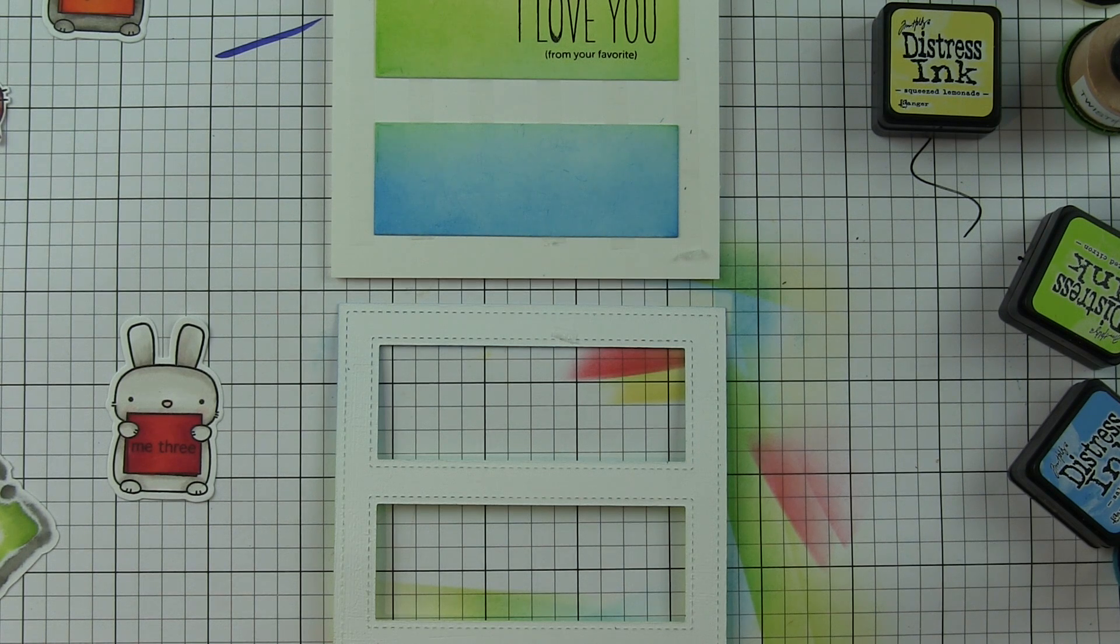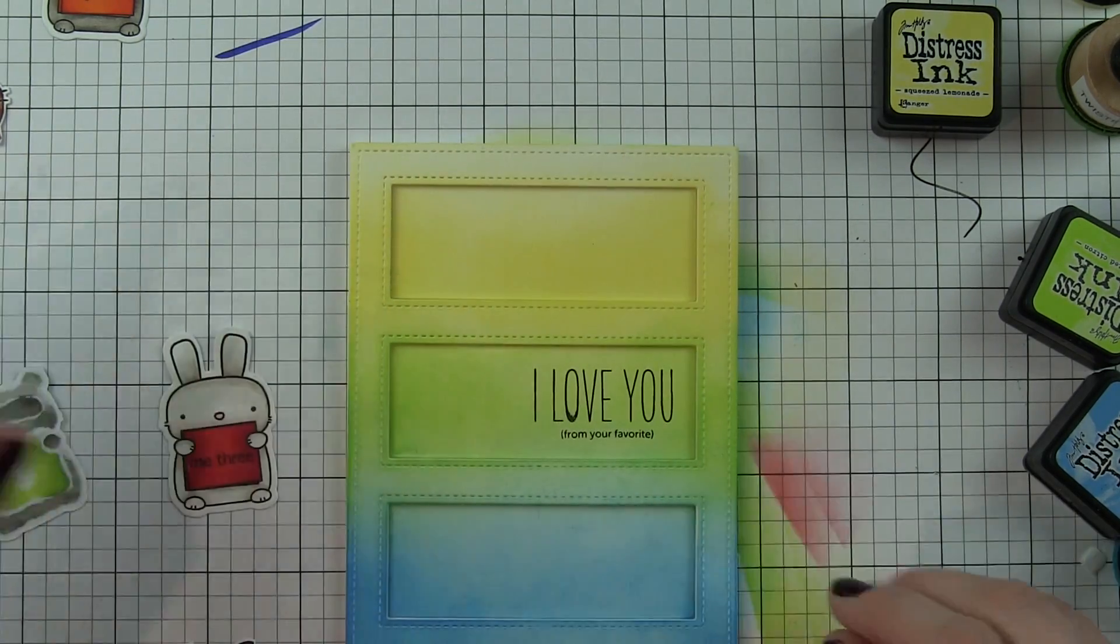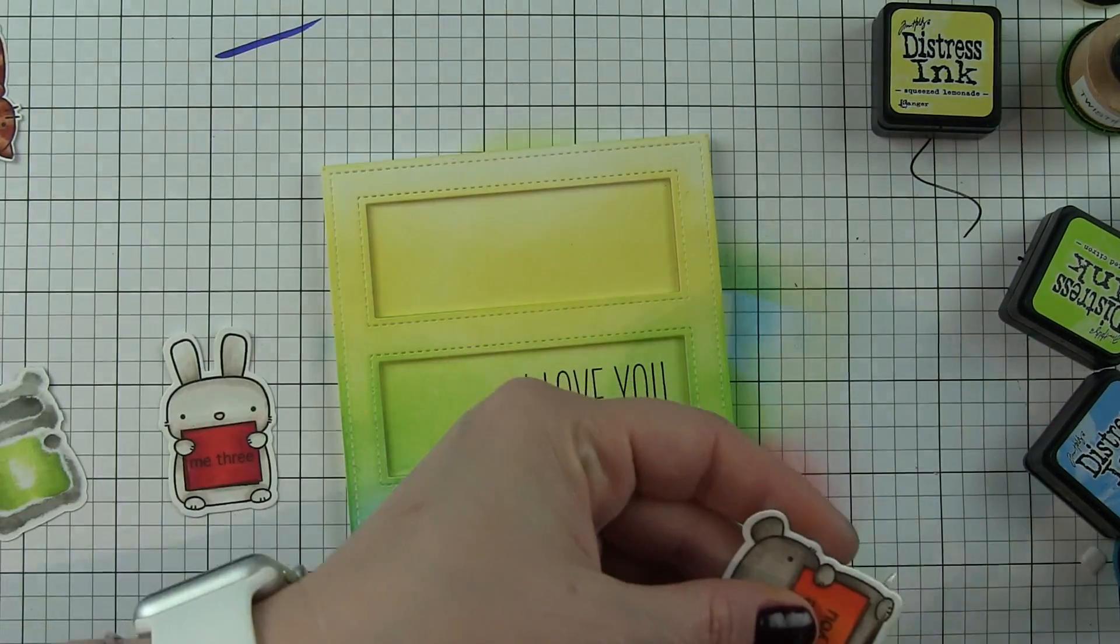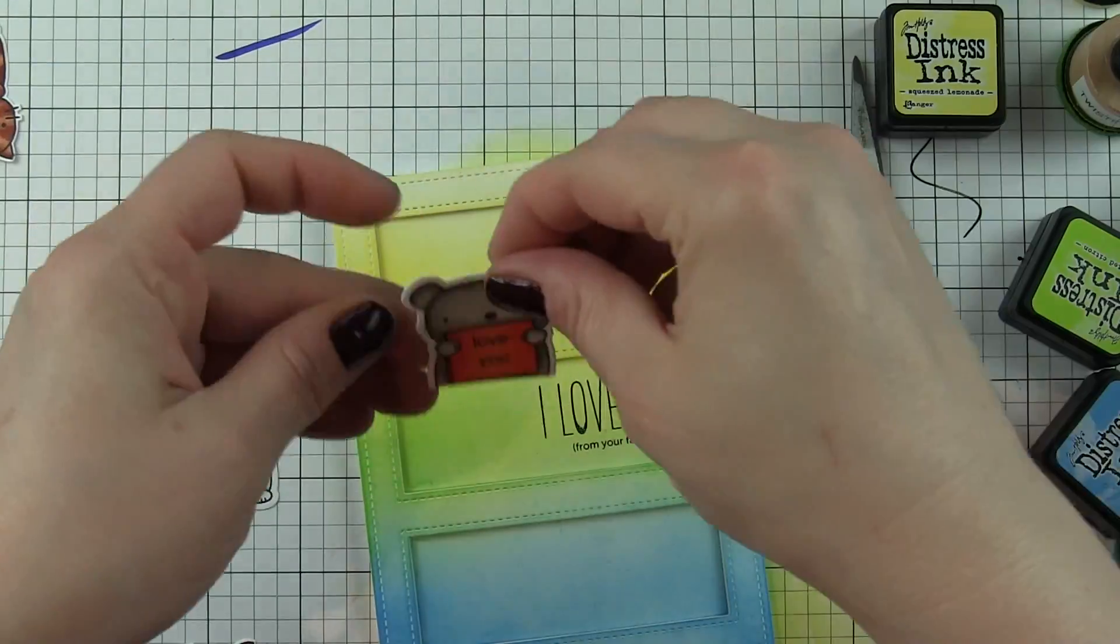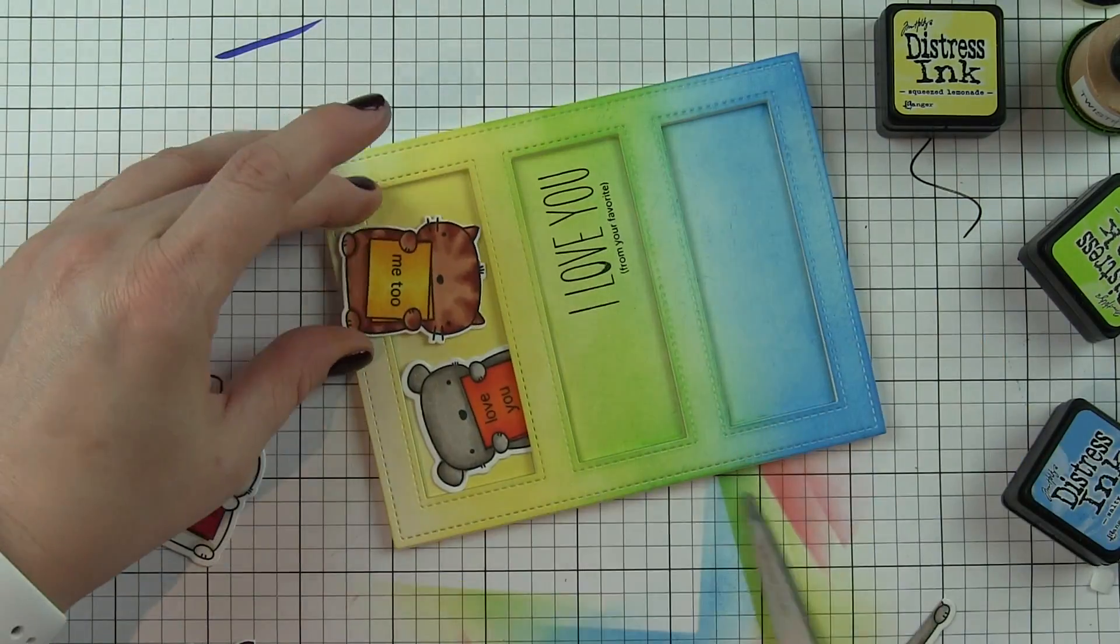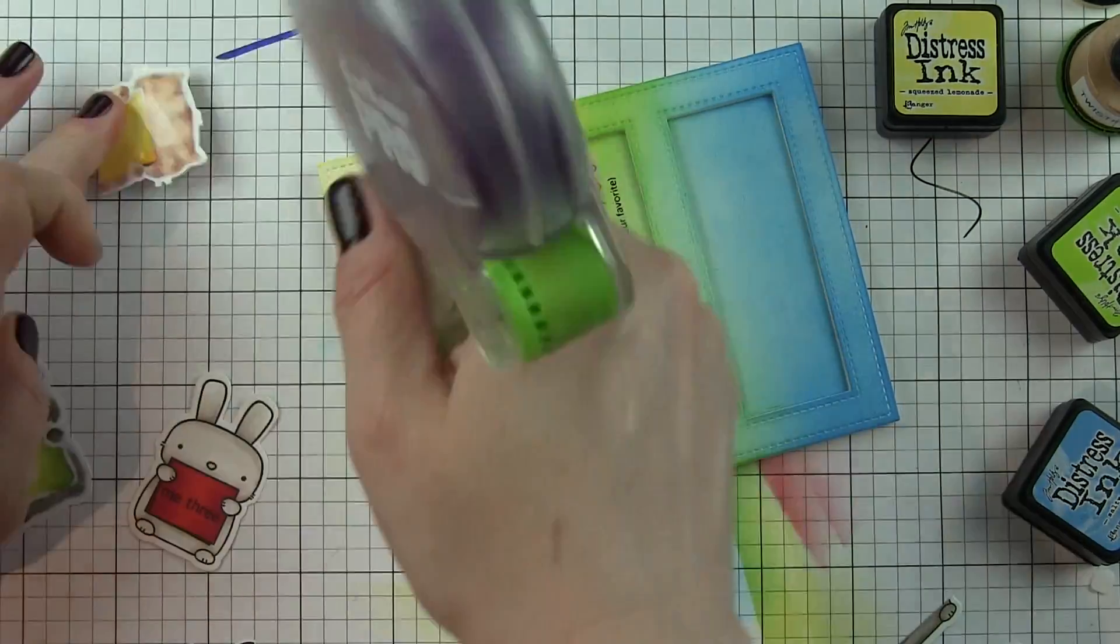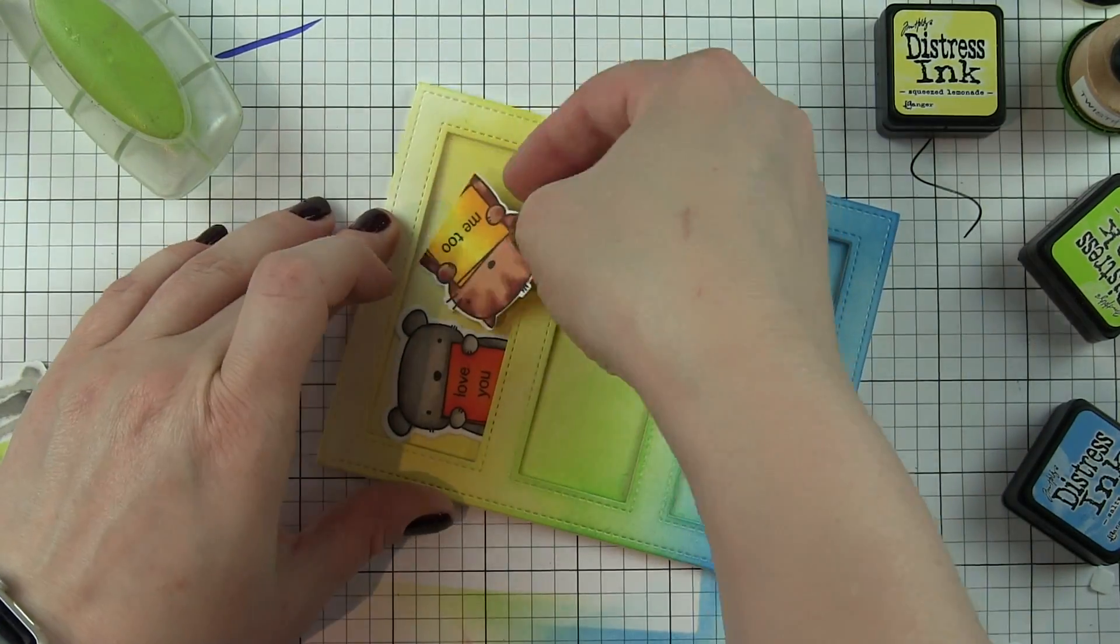I'm going to use some thin foam squares from scrapbook adhesives - I love that they're super thin, so while I'll still have some dimension it's not going to be too terribly high. I want to attach my critters and to make them lay nicer, I'm going to trim off a little bit on the bottom of each. I'm also going to tip the cat so the cat is kind of hanging upside down and peeking down from the top of the window. This adds a really fun whimsical touch.